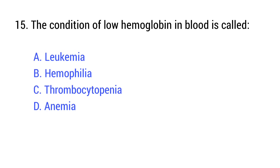Question number 15. The condition of low hemoglobin in blood is called — the right answer is option D: Anemia.